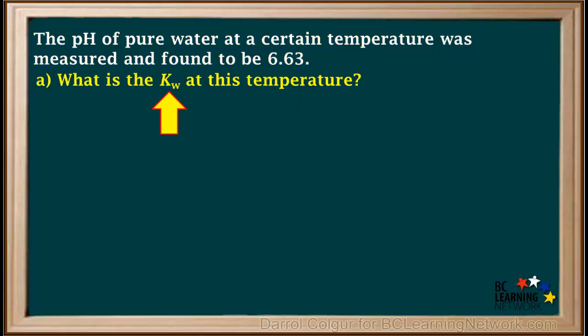Question A asks us to find the value of Kw at this temperature. We can do this using two different methods. In the first method, we start by converting the given pH to hydronium ion concentration. We use the formula hydronium ion concentration is 10 to the negative pH, which is 10 to the negative 6.63.